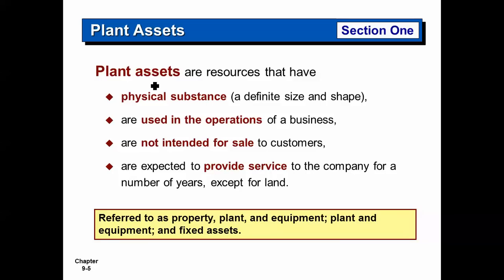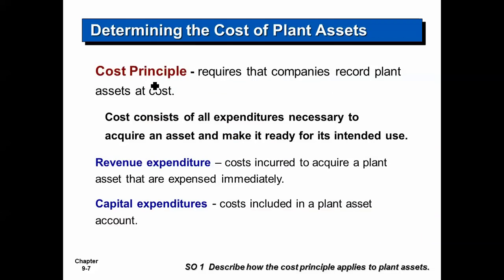The only asset that is never used up is land. Plant assets are also called fixed assets. In our textbook, we call them property, plant, and equipment. The cost principle requires that we record assets at cost. Costs consist of all expenditures — cash outflows — that were necessary to acquire the asset, bring it to my business, and get it ready for use. Some costs are called capital expenditures; others are revenue expenditures.